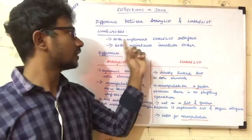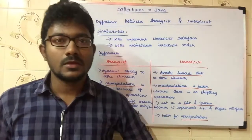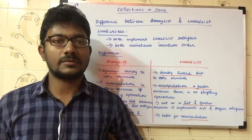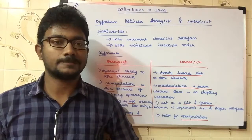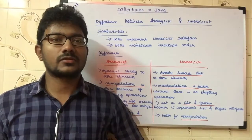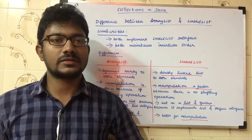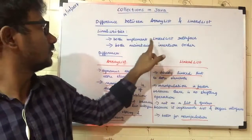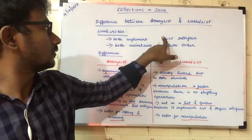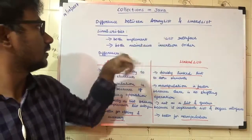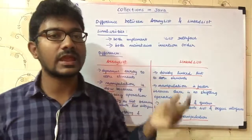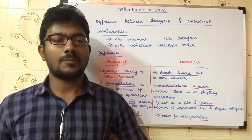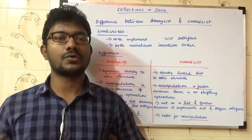The first similarity is both implement the List interface. The ArrayList interface is implemented and it maintains the insertion order. The insertion order means the first inserted element maintains its position.